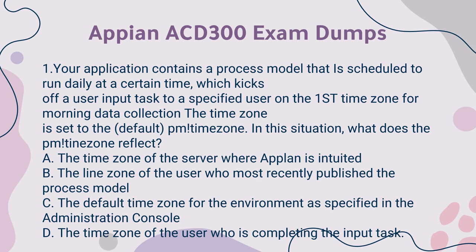A. The timezone of the server where Appian is installed. B. The timezone of the user who most recently published the process model. C. The default timezone for the environment as specified in the administration console. D. The timezone of the user who is completing the input task.